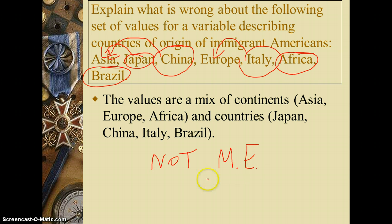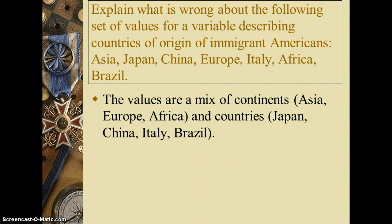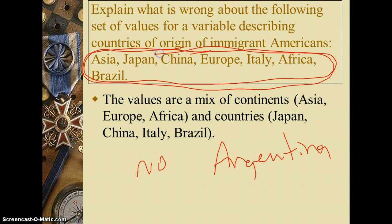How about collectively exhaustive? Do we have collectively exhaustive categories? Are these all the possible origins of immigrant Americans? The answer is no. There are many other countries in South America — you could be from Argentina. If you're from Argentina and these are the only options, the closest you could get is Brazil, and that's incorrect. So these values are not mutually exclusive and they are not collectively exhaustive.